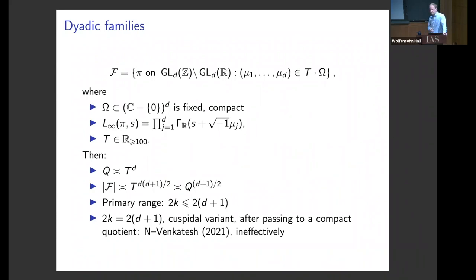When I say in all these different references that something is 'done,' I mean an asymptotic formula. I've indicated in places when it is not with a power savings. The Soundararajan-Young theorems give a logarithmic savings; this one gives an o(1) savings; but the others have all been power savings.